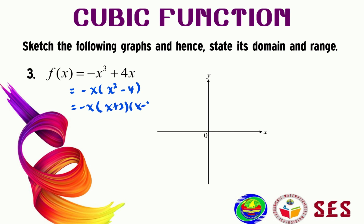The factor (x² - 4) can be further factorized, giving us -x(x + 2)(x - 2). So our x-intercepts are at x = -2, x = 0, and x = 2. Since the coefficient of x³ is negative, the graph goes from smile to sad. Let us sketch the graph passing through all intercepts.